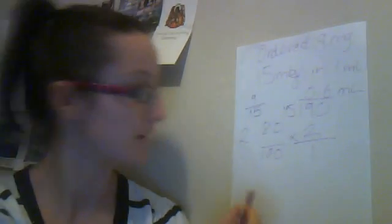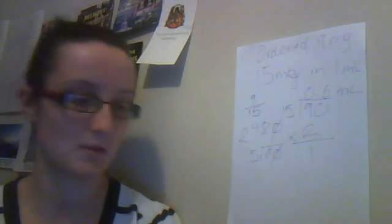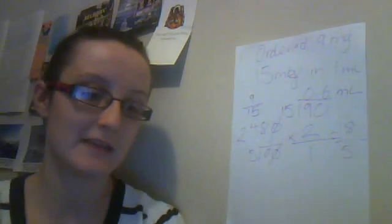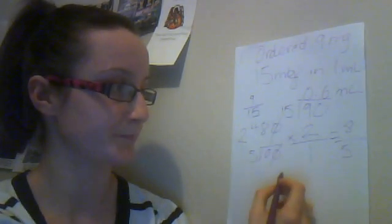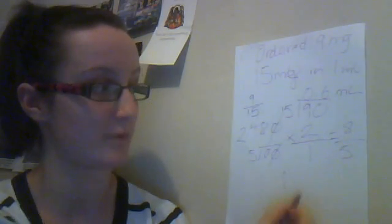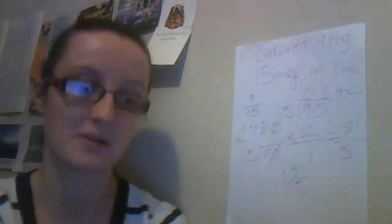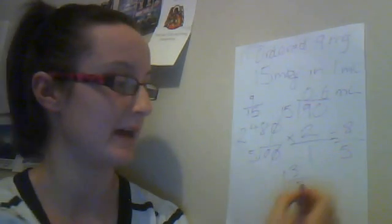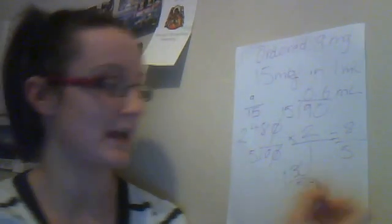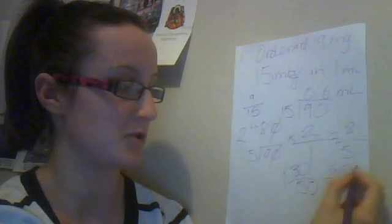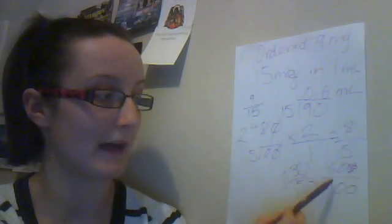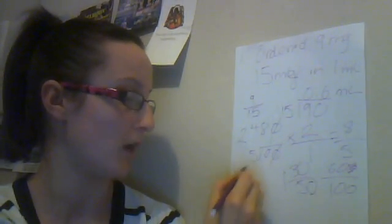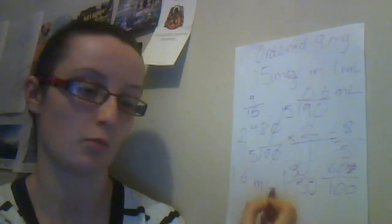You can cancel these down — cancel the zeros to get 8 over 10, then simplify to 4 over 5. Then times by 2 over 1, which gives 8 over 5. How many 5s in 8? One, with 3 remaining, so you have 1 and 3 over 5. To convert 3 over 5 to a decimal, make it 30 over 50, then 60 over 100, which is 0.6. So the answer is 1.6 mils.